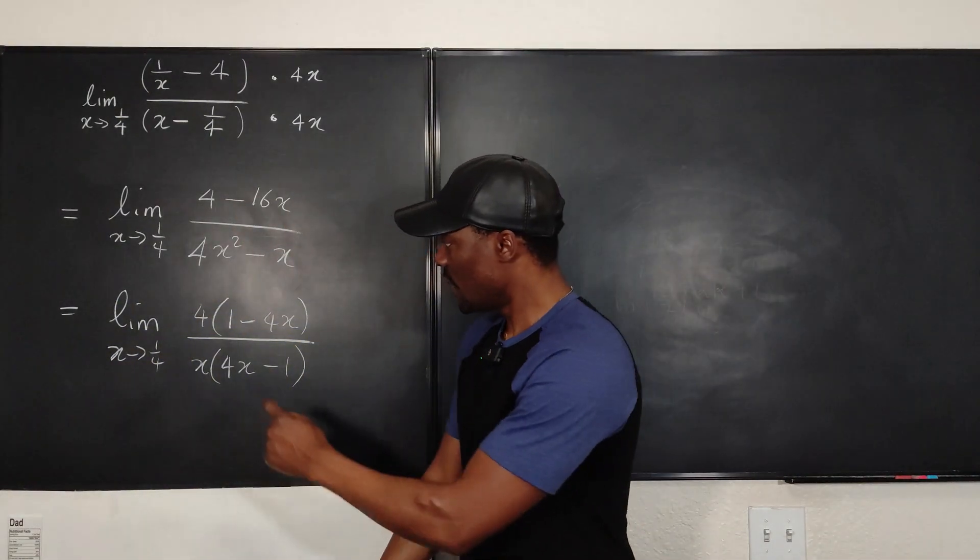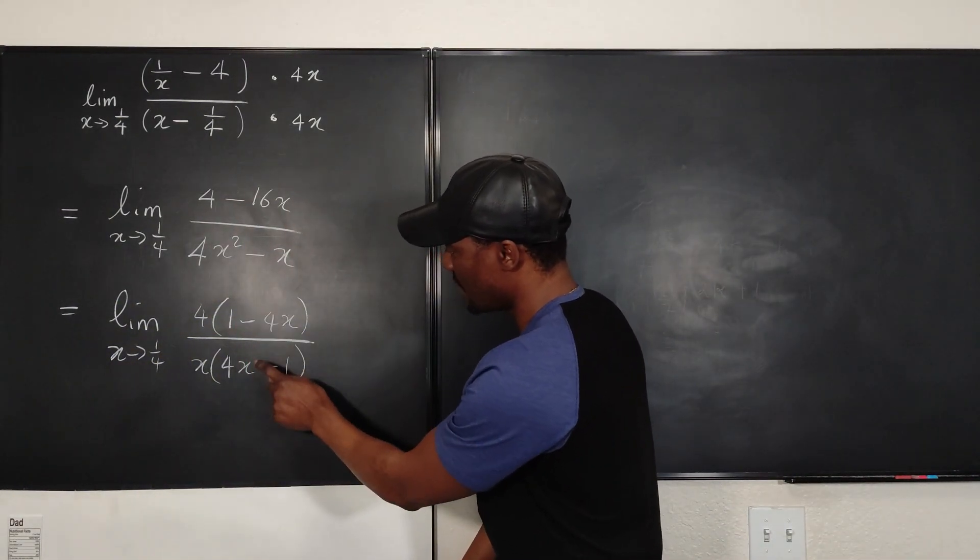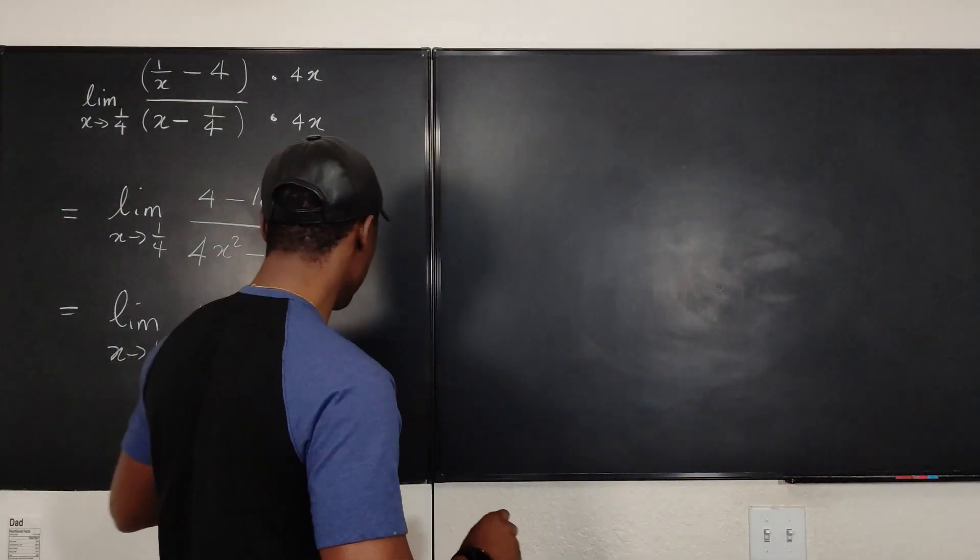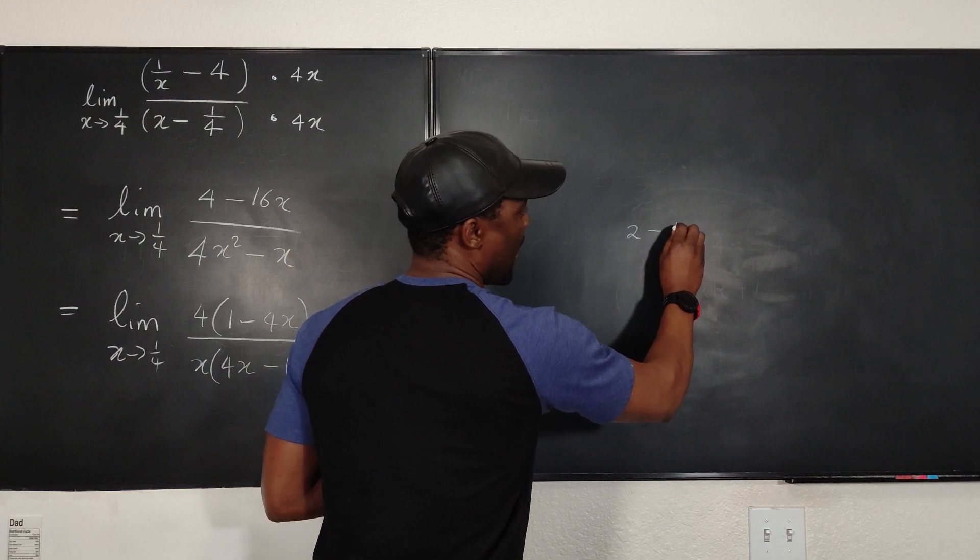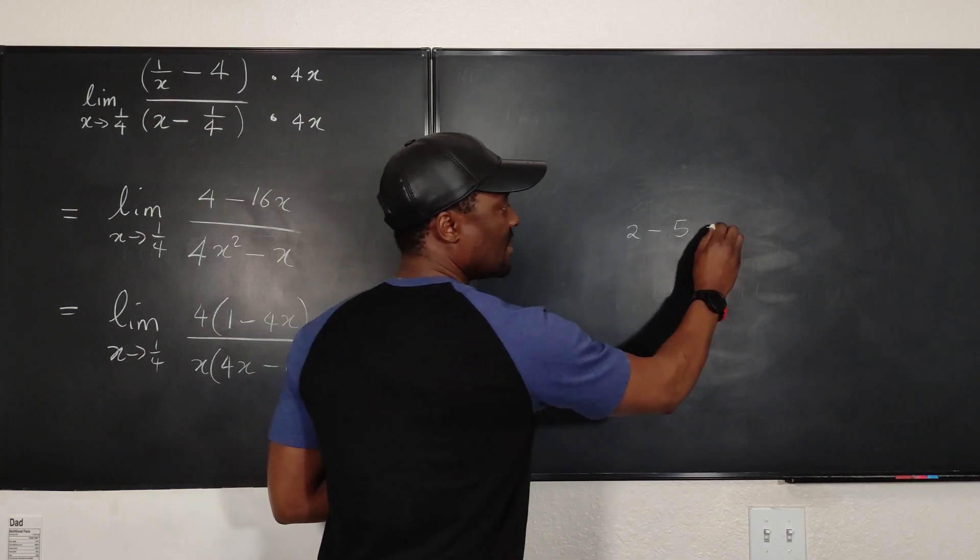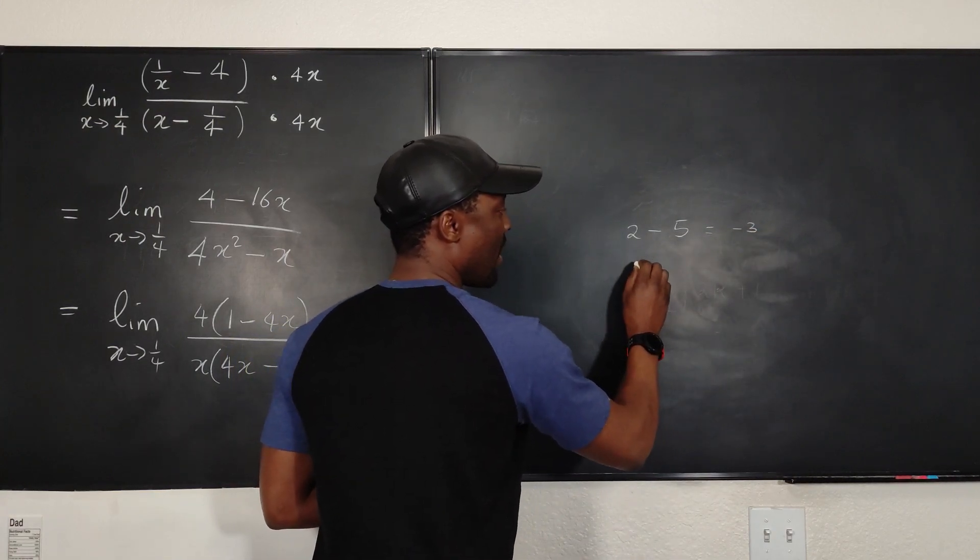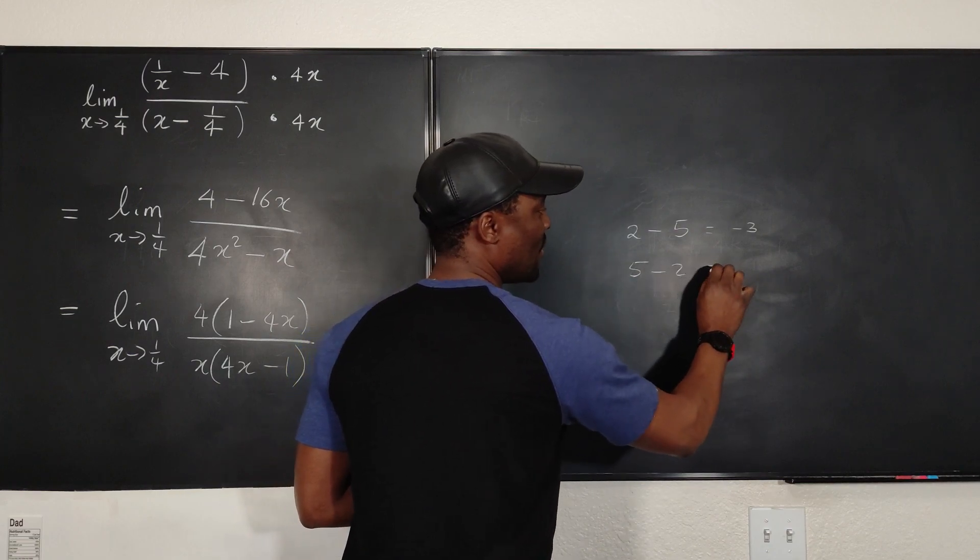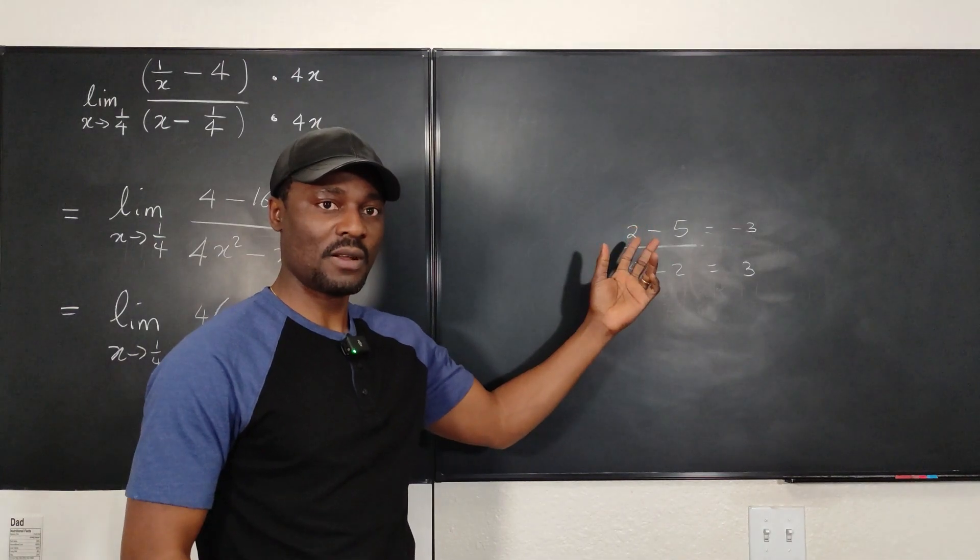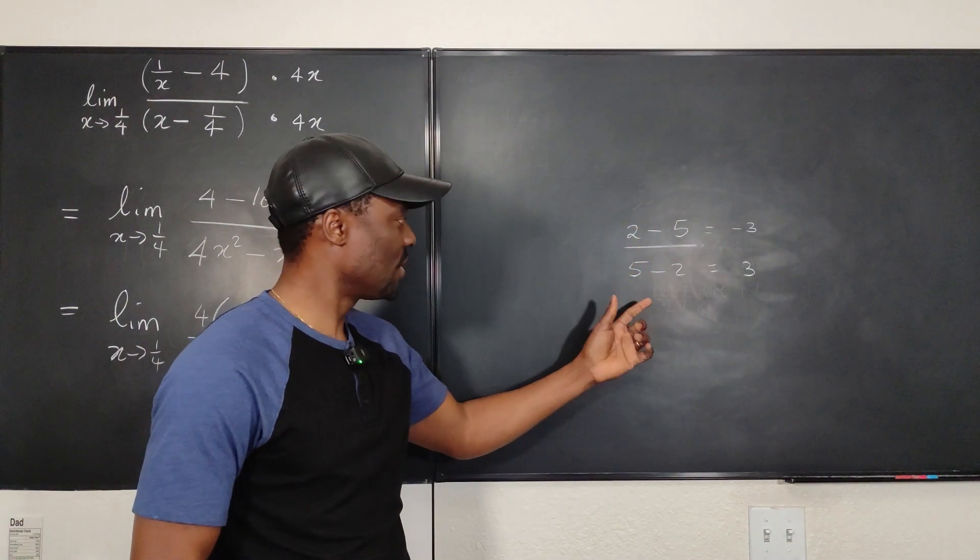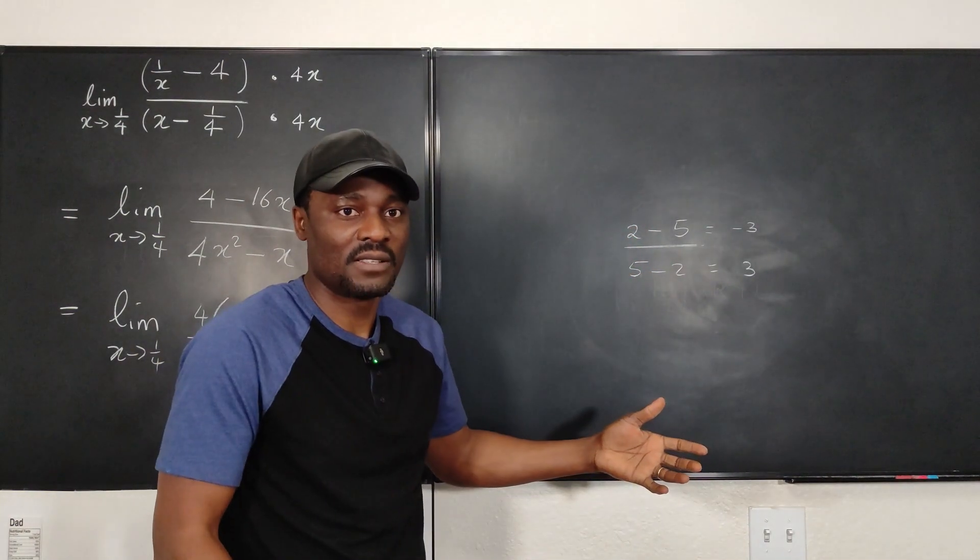Look, this is 1 minus 4X. This is 4X minus 1. So remember, generally in algebra, 2 minus 5 is negative 3. But what about 5 minus 2? What is it? It's 3. So you notice that when you switch the terms in a subtraction, what you're getting is just the negative of the answer.